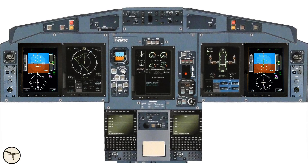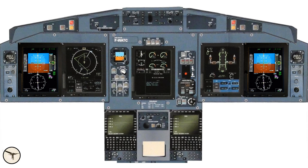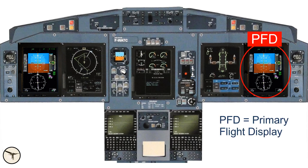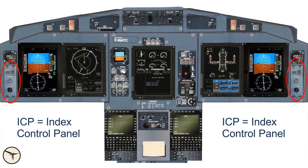For those of you who are not familiar with the glass cockpit in ATR 42 and 72-600, here is a short introduction. The instrument panel is dominated by five display units. The outer left display unit is the primary flight display for the captain, and the outer right display unit is the primary flight display for the first officer. Next to each primary flight display is a panel called the index control panel, ICP.